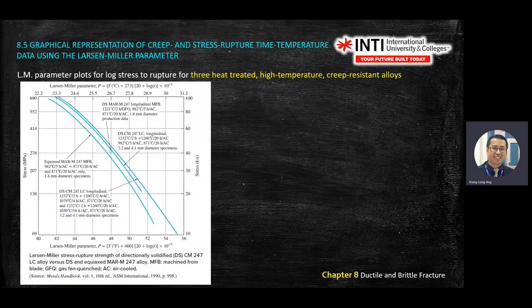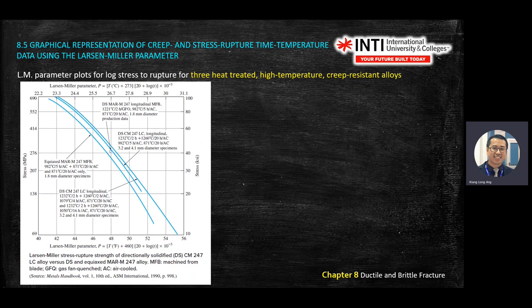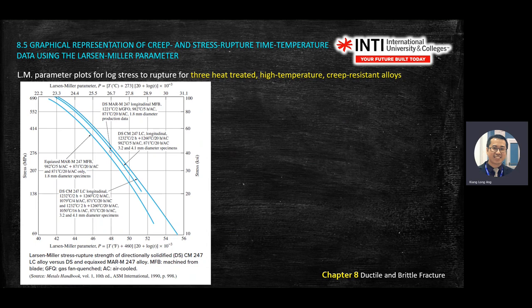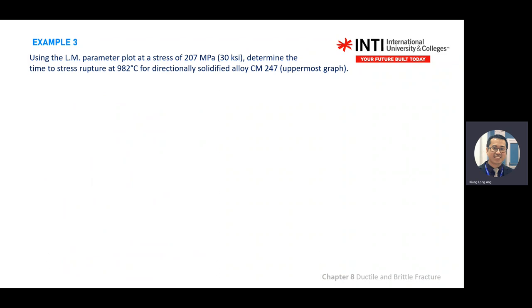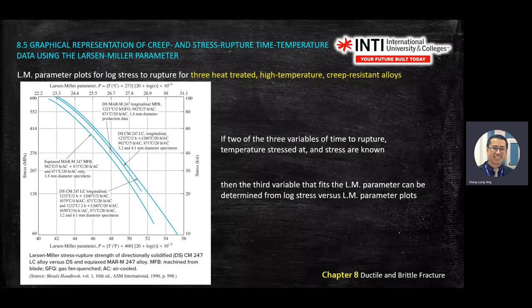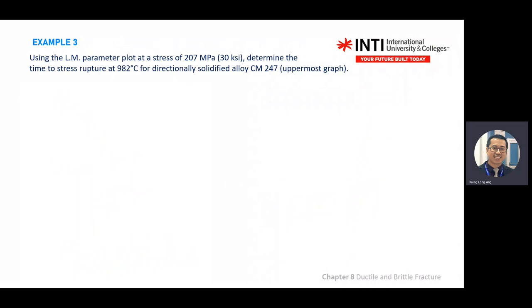On the LM parameter graph, the y-axis is stress and the x-axis is the parameter. Different materials are plotted here — these are three high-temperature resistant alloys. If you see 'F + 460' it means it is in the Rankine formula. Example three asks you to use the LM parameter plot at a stress of 207 MPa to determine the time to stress rupture at a given temperature for directional solidified alloy CM247.